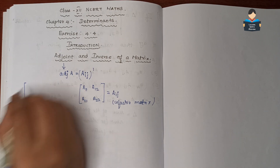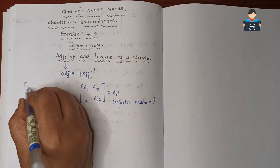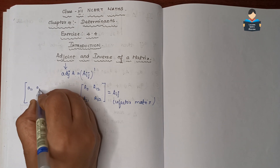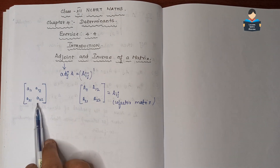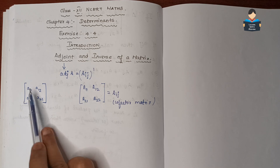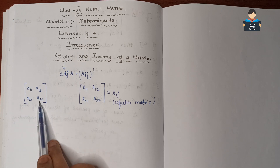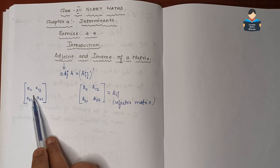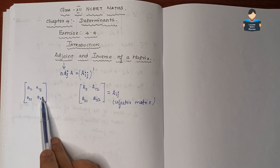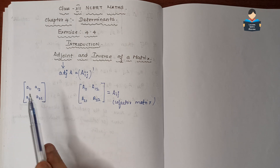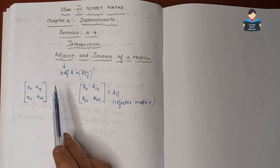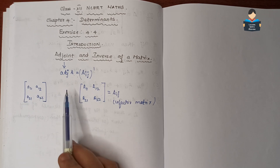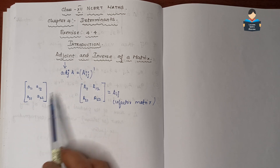For a 2x2 matrix, we find out a11, a12, a21, a22. We find out the cofactors of each element, as done in Exercise 4.3. The formula used is: cofactor = (-1)^(i+j) × M_ij, and we solve using this formula.